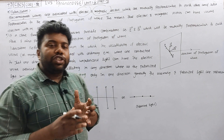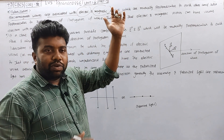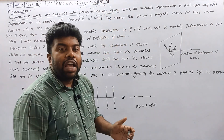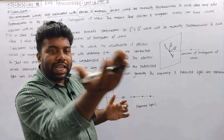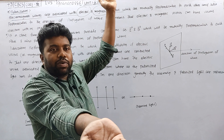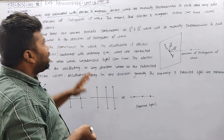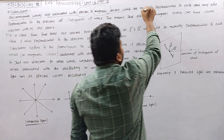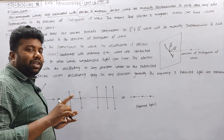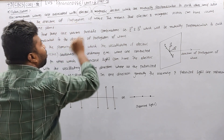An electromagnetic wave is associated with both electric and magnetic vectors. If you look at the x-axis and y-axis, both are mutually perpendicular to each other. If you look at the electric and magnetic wave, both are mutually perpendicular to each other.